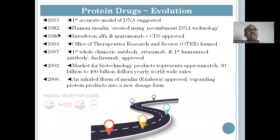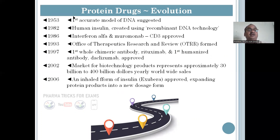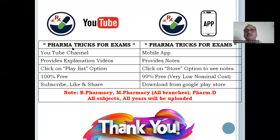This is the evolution — how protein drugs were developed. The roadmap from 1953: first accurate DNA structure suggested, then human insulin created using DNA technology. This is the evolution — meaning development — of protein drugs.